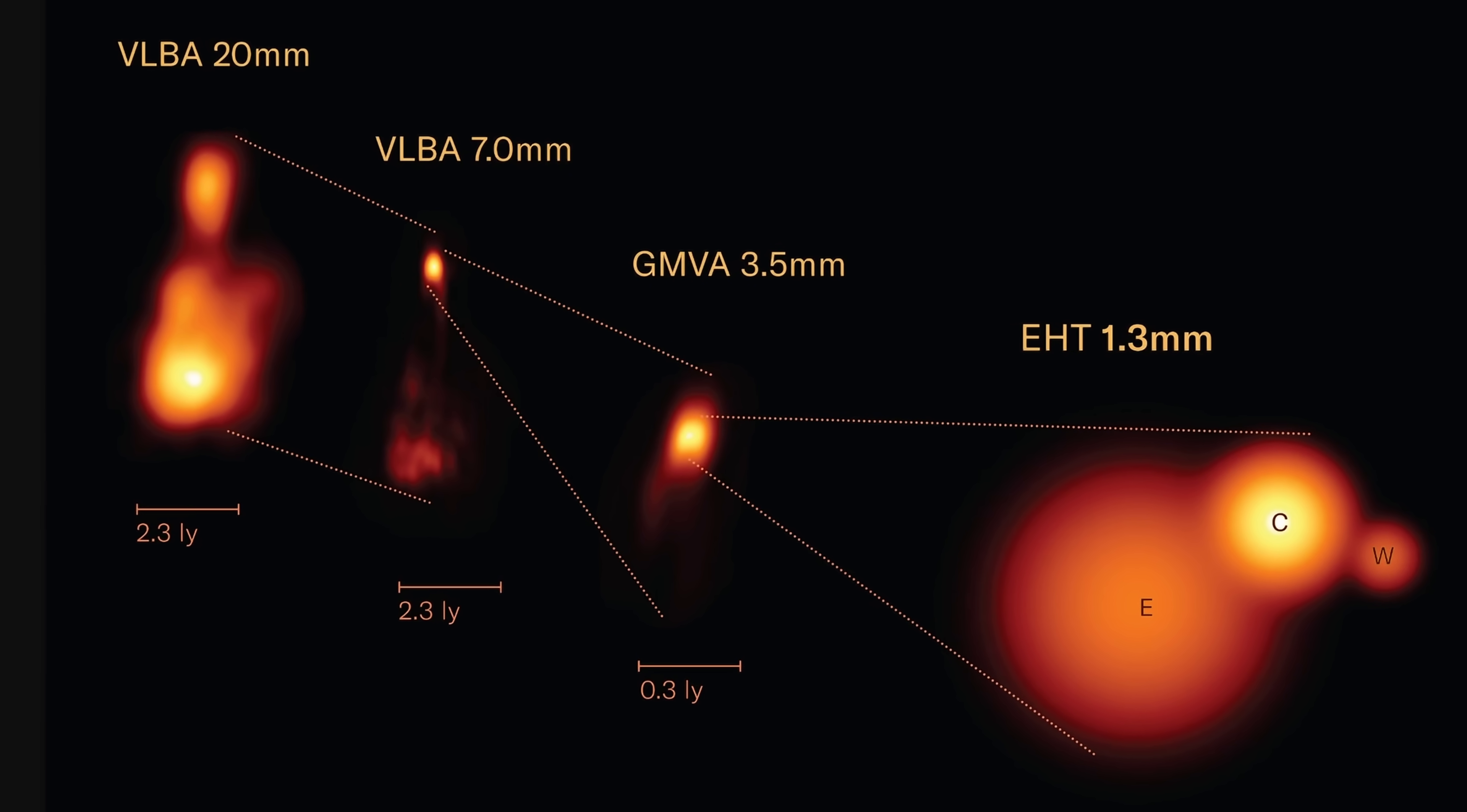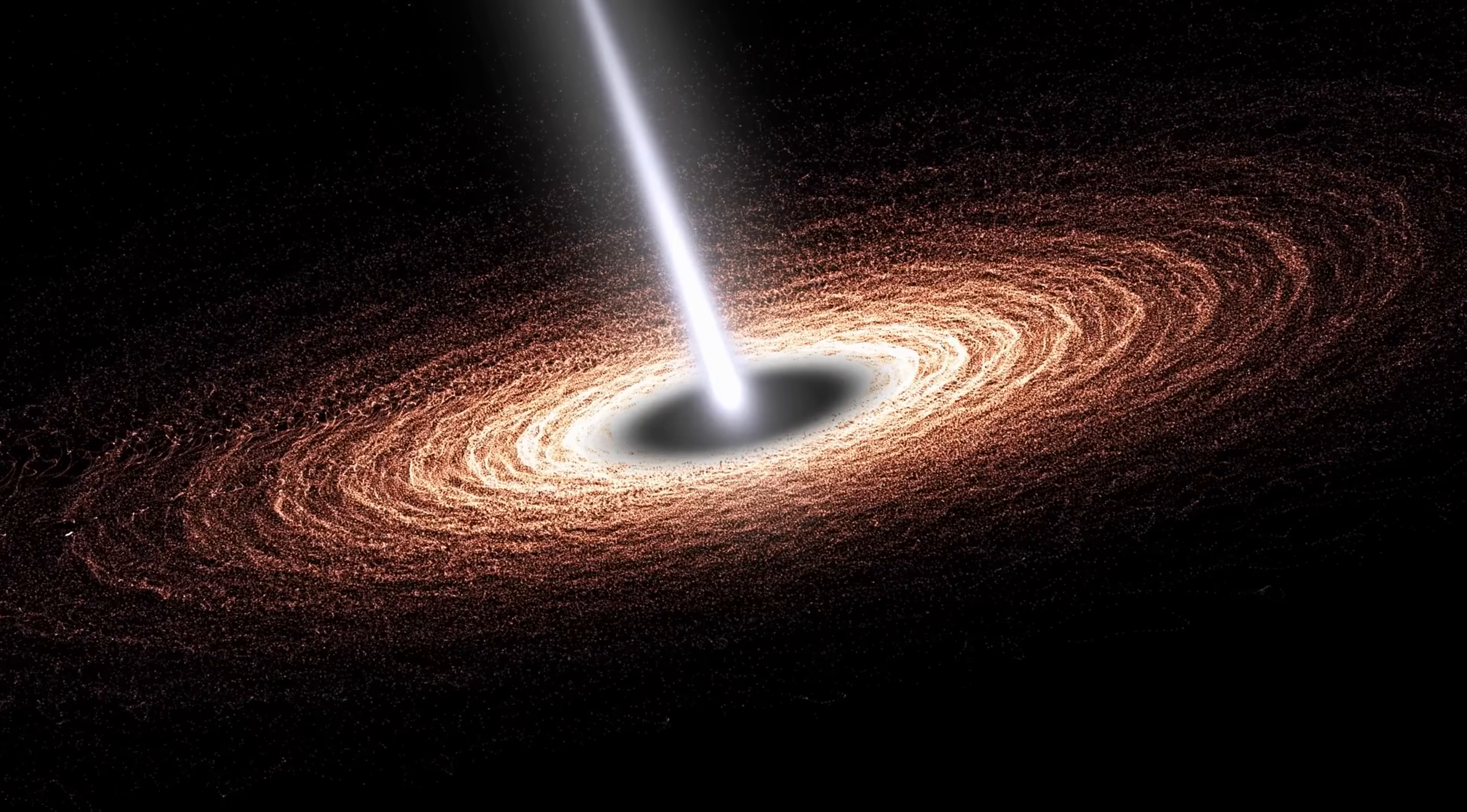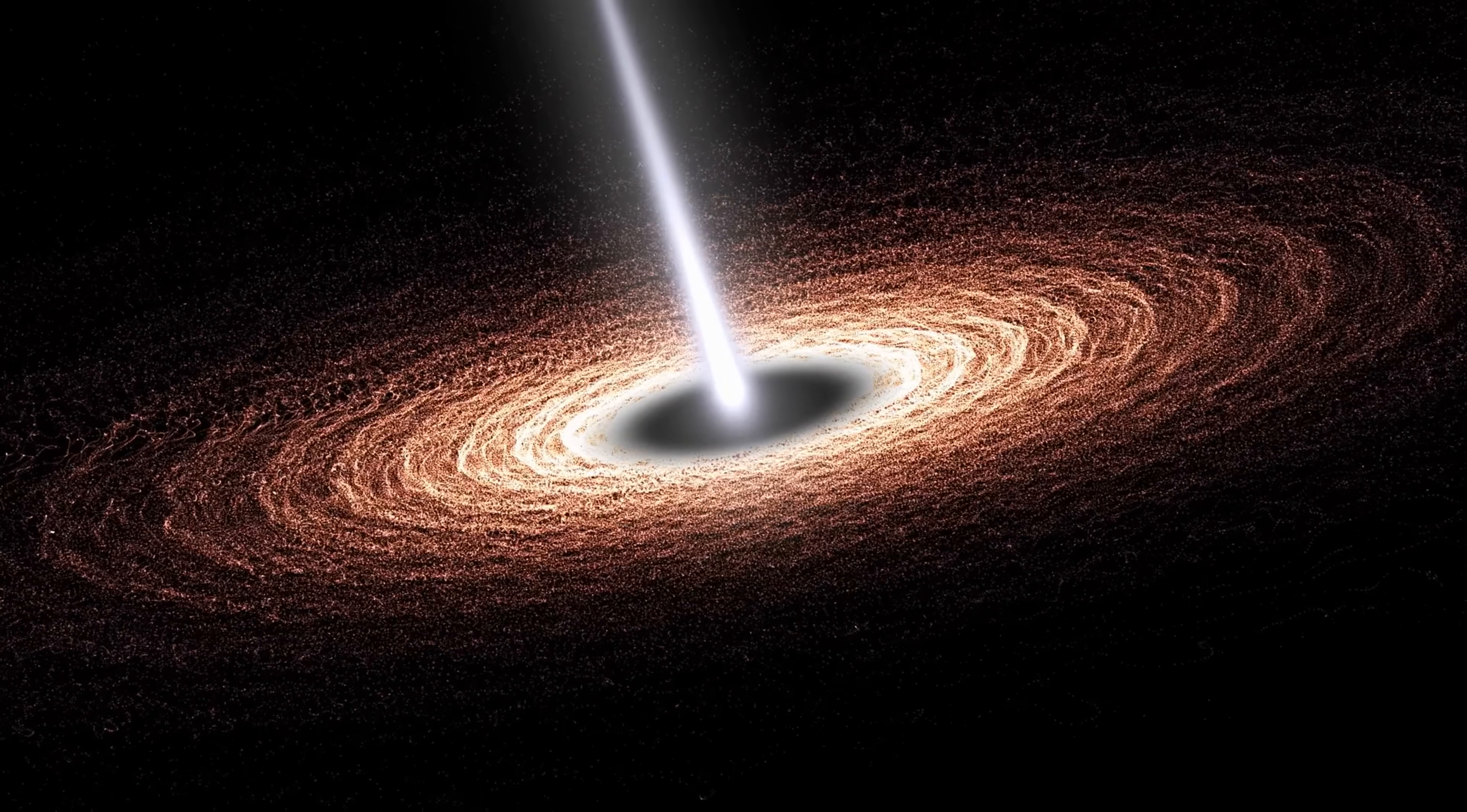For example, Perseus A, the closest active supermassive black hole, with the jets providing us a few clues on how they begin.